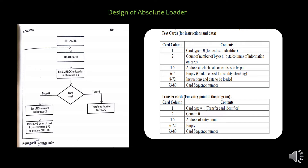One variable called cursor location is used to track where to load the instruction. It holds the value mentioned in column numbers 3 to 5, which contains the address. Once the cursor location is set, the card will be read. If the card type is 1, meaning it is a transfer card, it indicates that everything is loaded, so simply transfer control to that particular location stored in the cursor location variable.